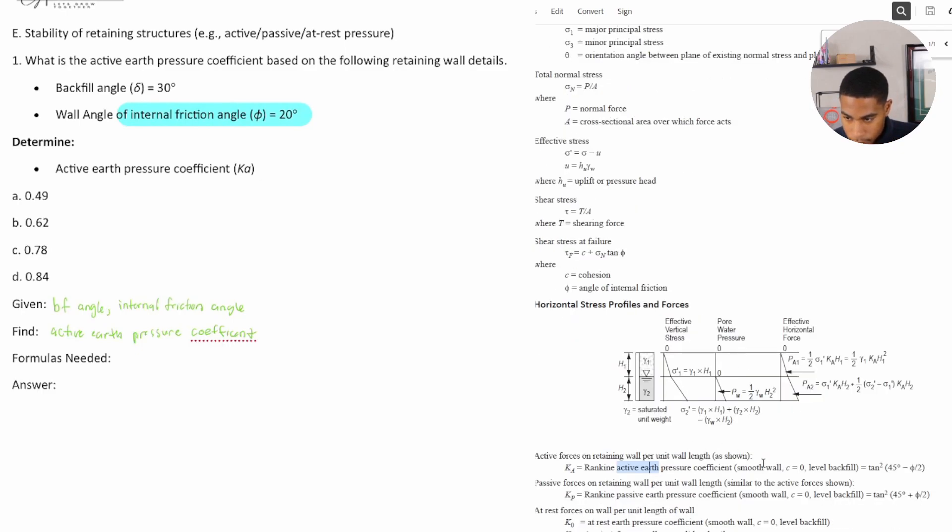So now we solve. Alright, I think I have everything that I need. Ka is equal to tangent squared of 45 degrees minus the angle of internal friction. And when I solve for that, I get my active earth pressure coefficient to equal 0.494.